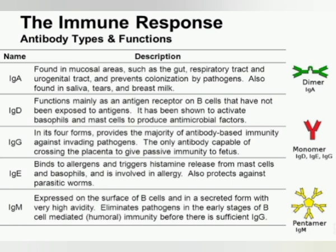Immunoglobulin G is found in all body fluids and is the smallest and most common antibody, comprising 75 to 80 percent of antibodies in our body. It helps in fighting against bacterial and viral infections. The most important thing to remember about IgG is that it is the antibody that crosses the human placenta. Immunoglobulin M — where M means macro — so they are the biggest in size and are called macro antibodies. They are found in body lymph fluid and are the first type of antibody to respond to any kind of infection. IgM comprises about 5 to 10 percent of all antibodies in the body.